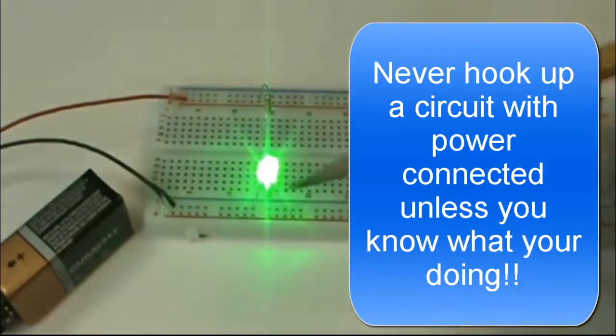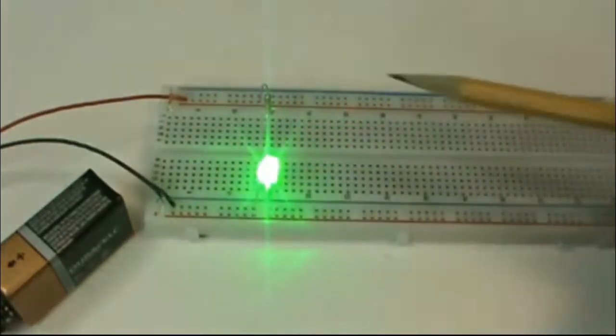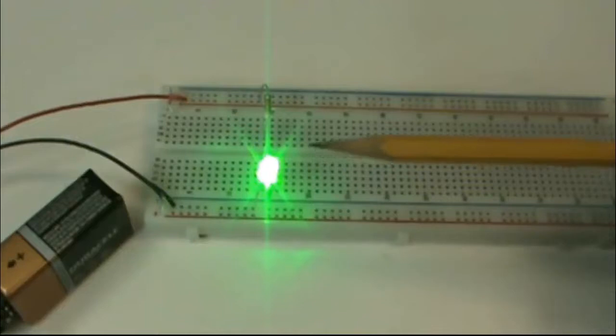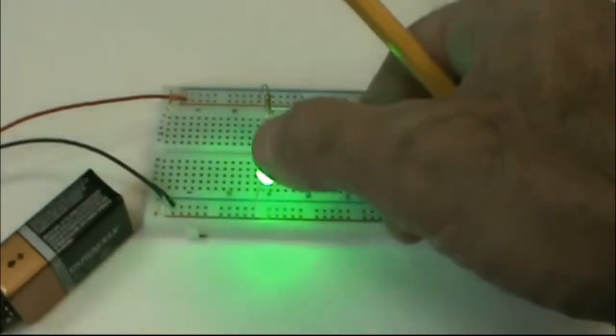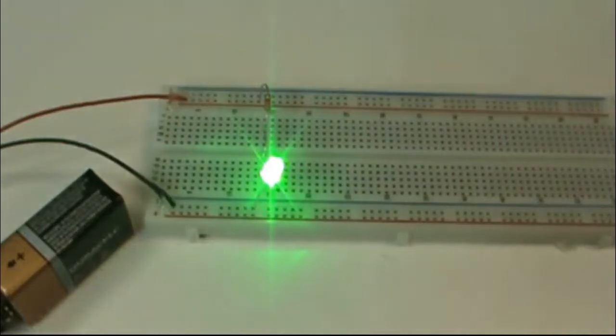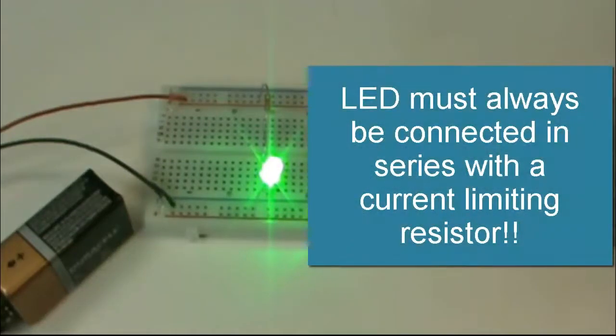And so this is a very bright green LED. Most LEDs nowadays are coming in clear packages I've noticed and they're extremely bright. This is a super bright LED in green. So this is the way to hook up one of the simplest circuits you can hook up.